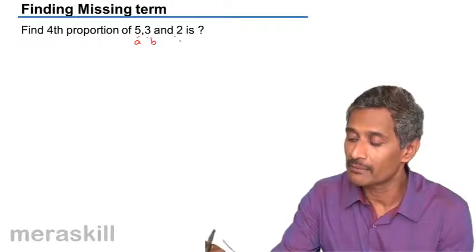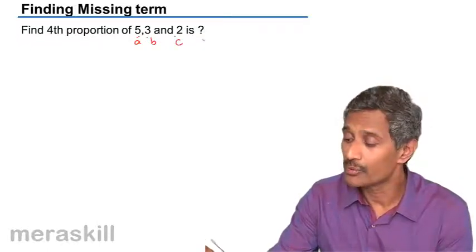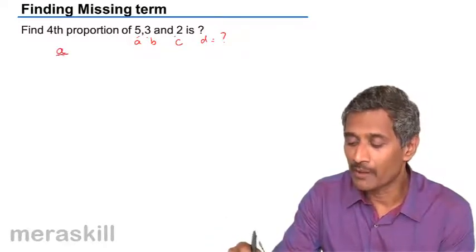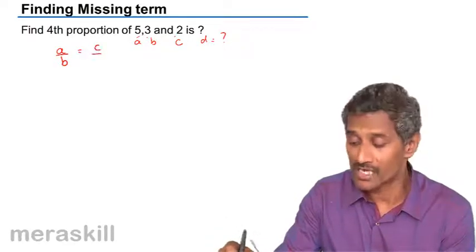So, this is like A, this is like B, this is like C. So, we need to find D which is understood that A upon B is equal to C upon D.